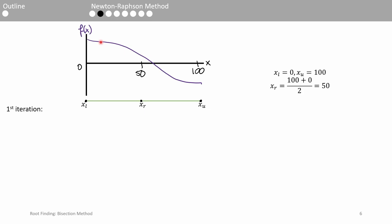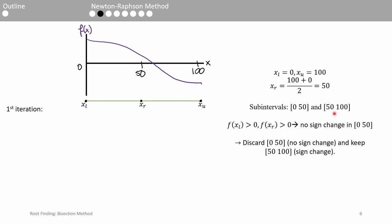We then halve the initial bracket and assume that the root lies at the midpoint of the boundaries. So, we get two subintervals, one from 0 to 50, and one from 50 to 100. We keep the subinterval which contains a sign change and discard the other. In this case, the interval 50 to 100 contains a sign change, so our new bounds become x_l = 50 and x_u = 100.